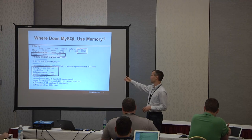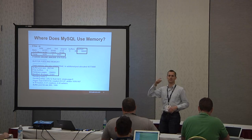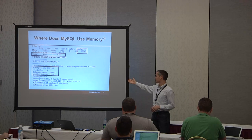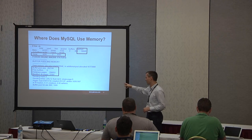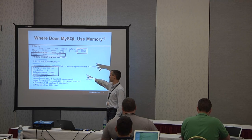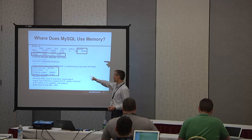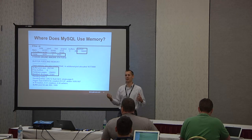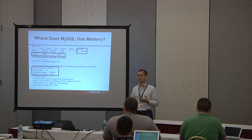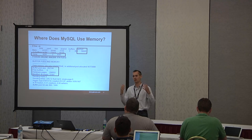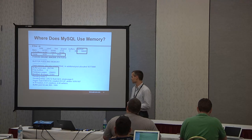When you look at SHOW ENGINE INNODB STATUS, it shows how much memory is allocated to the buffer pool in terms of pages — each page is 16K — and how many pages are actually utilized and modified in memory. In this example, the free buffers are zero, meaning the buffer pool is completely filled up. Out of 262,000 pages, 258,000 are actual cached pages, because the buffer pool also stores things like adaptive hash indexes and insert buffers.